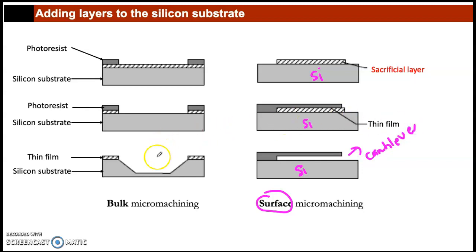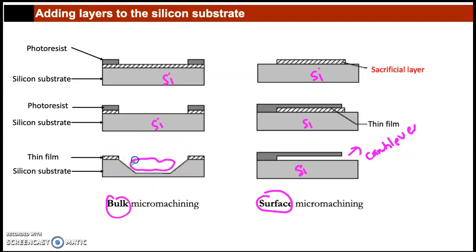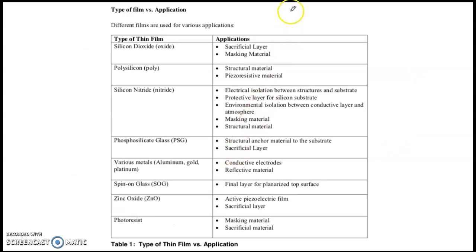For bulk micromachining, you etch into the substrate itself. If your substrate is silicon, your device or cantilever comes from the substrate — the silicon is etched away and a thin film is added on top. The choice between bulk and surface micromachining depends on the application.